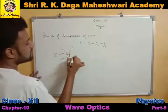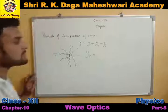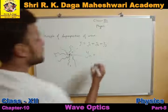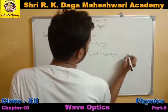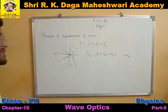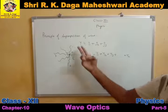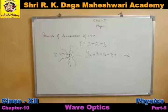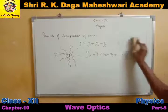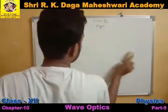This principle is called the principle of superposition. If we assume n number of waves are incident on a particle, then the net displacement of this particle due to n waves is equal to the sum of individual displacements caused by all the waves together. This principle is called the principle of superposition of waves.